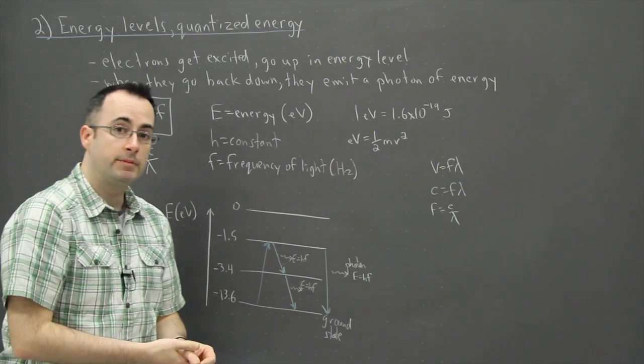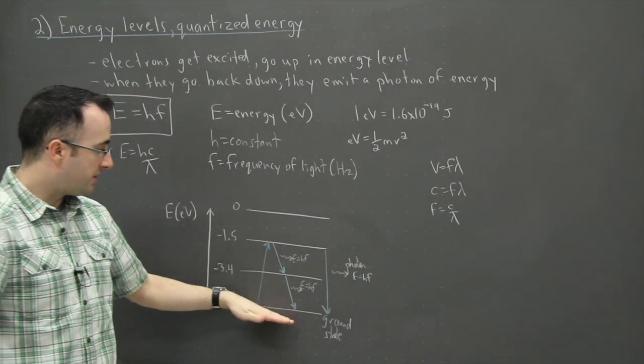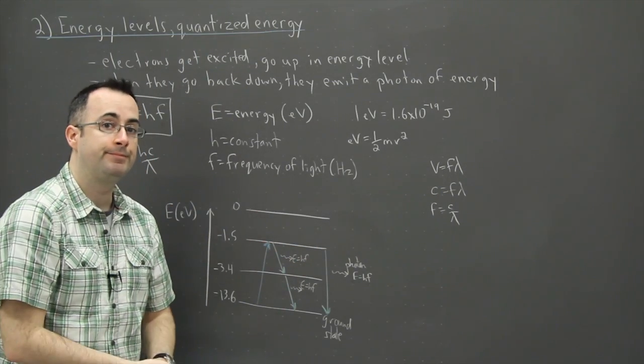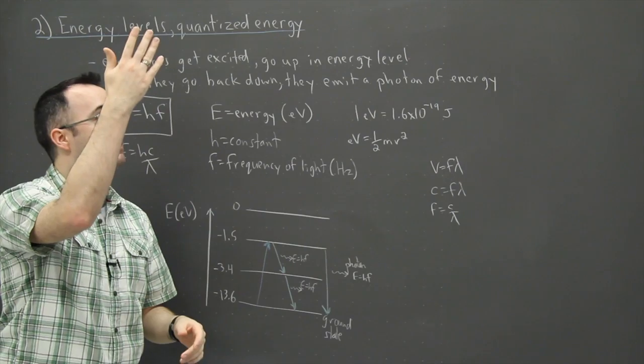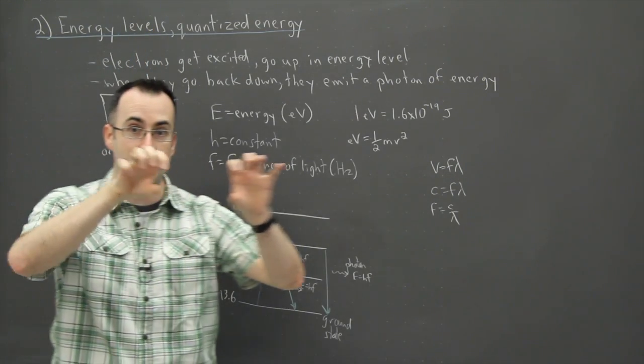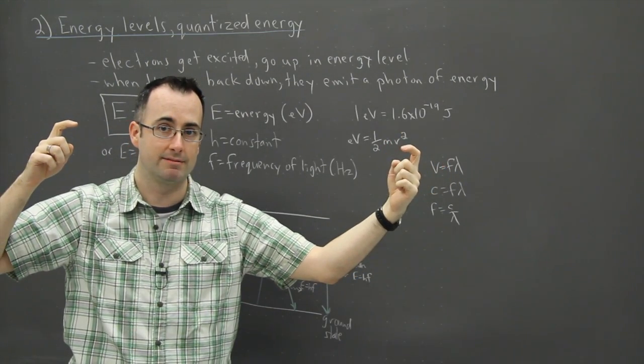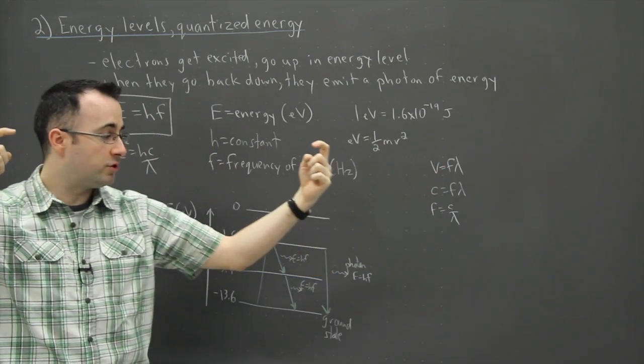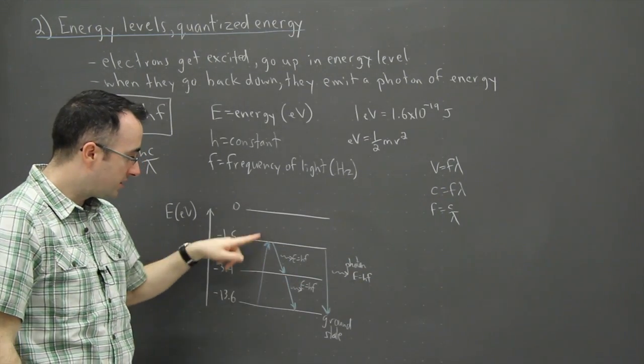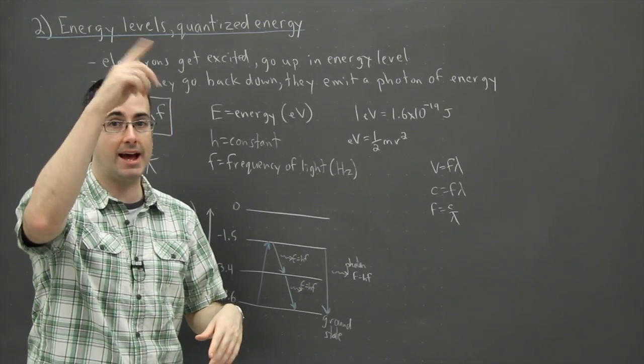So what this tells you then is that this one electron going from here to here can actually make three different colors of light. In these fluorescent lights that I have right above me—you can't see it but it's a big tube and they're really bright right now because we're giving it lots of energy. It's plugged in, and what we're doing is we're exciting these electrons to a certain level, not necessarily the same because this is just for hydrogen.